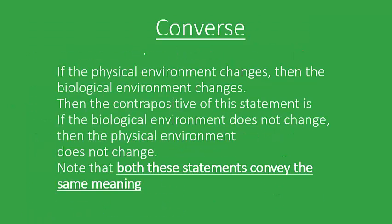The next part is that of the converse, and you will find many moves in your later mathematical classes through the converse. Let's see what converse means with an example: if the physical environment changes, then the biological environment changes. This is a particular statement — let it be denoted by p. Then the contrapositive of this statement is: if the biological environment does not change, then the physical environment does not change.